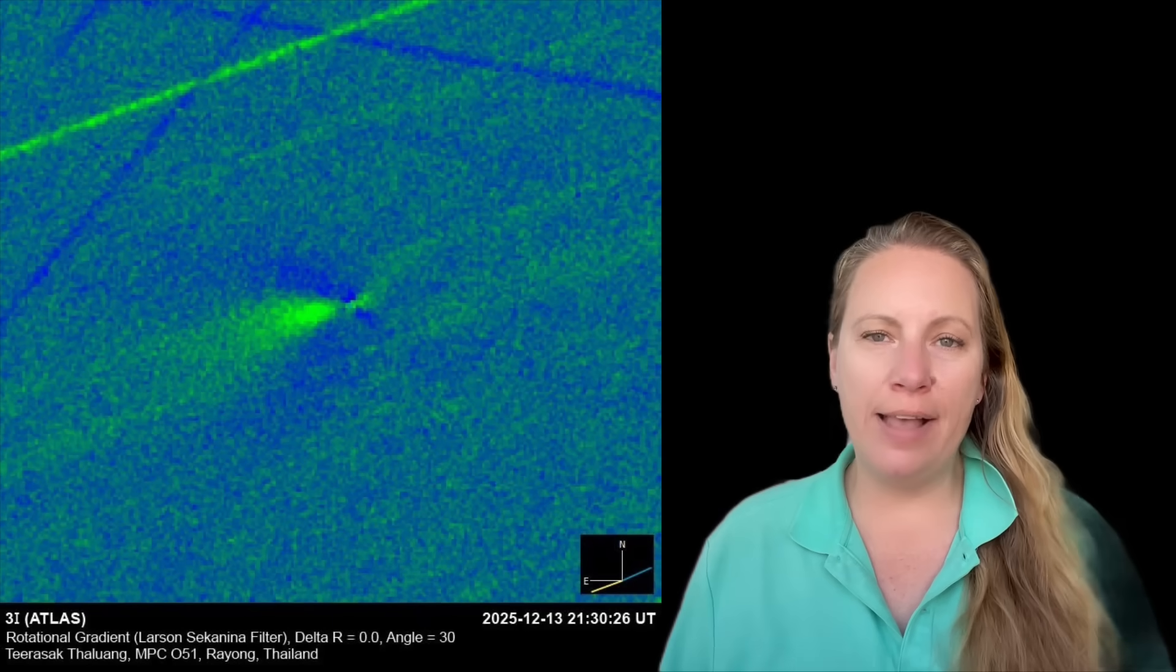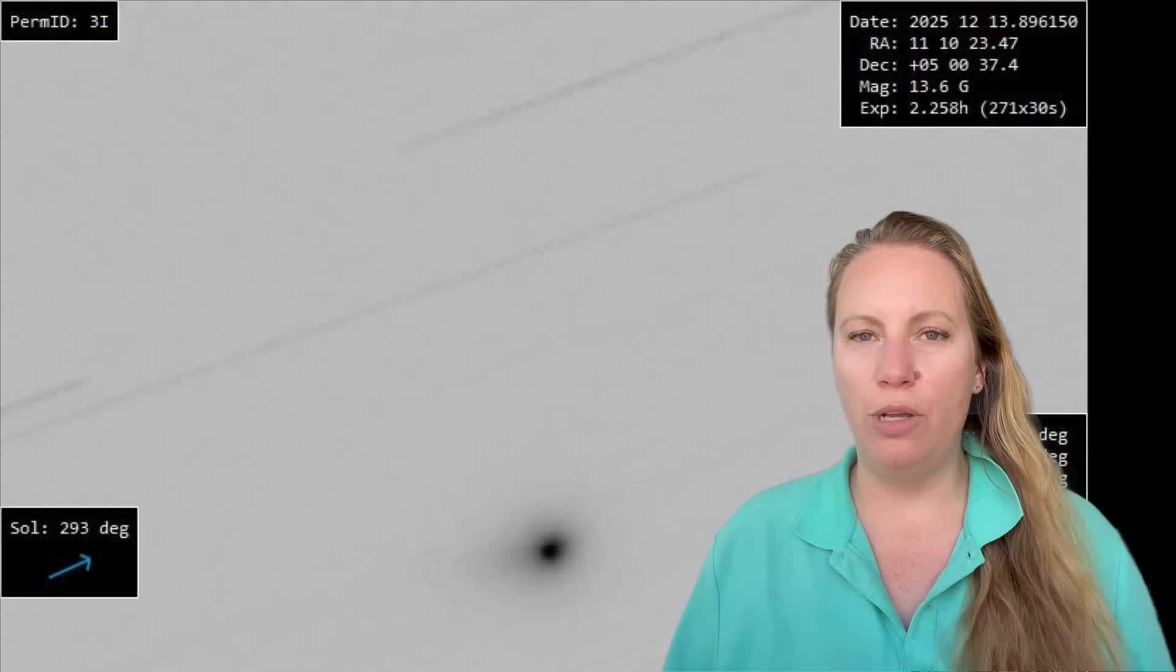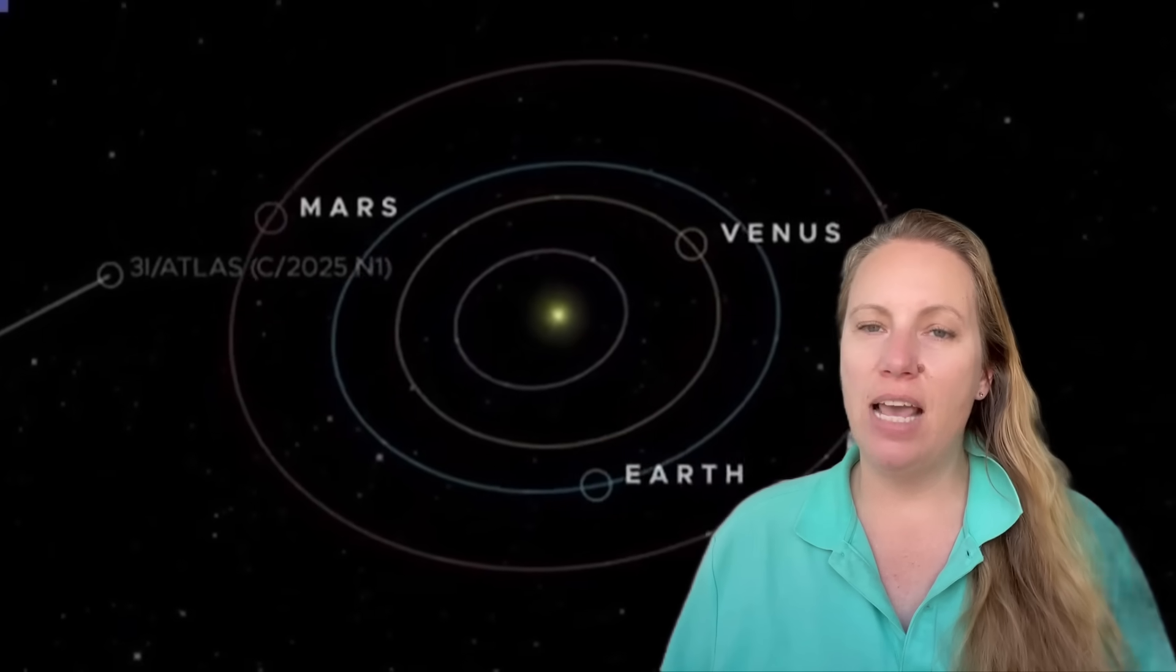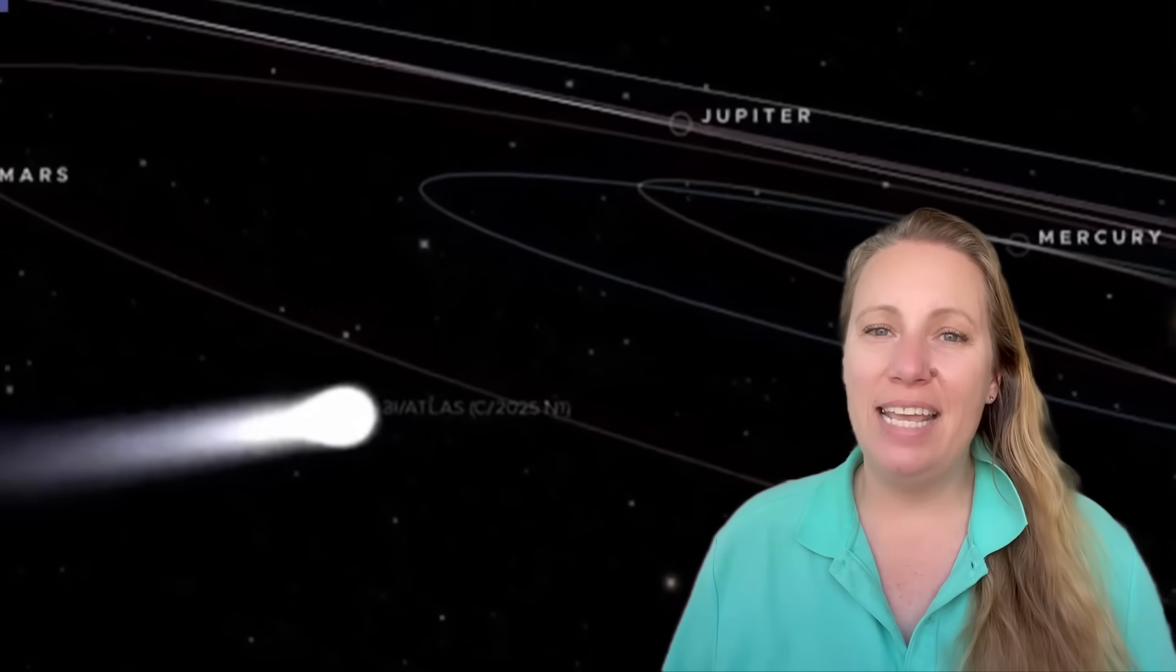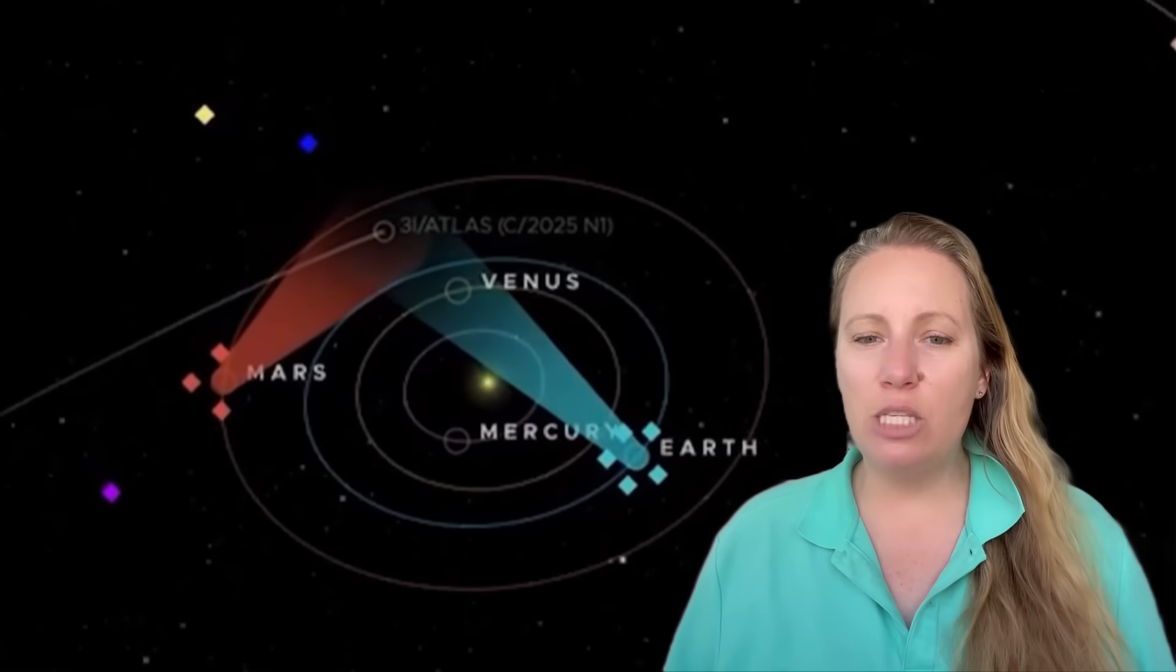They said it's losing the tail as it's moving closer to Earth. 3i Atlas is not coming towards Earth. It's reaching the closest point to Earth in just a few days on December 19th and we hope that we can get the best observations and collect as many data as possible.